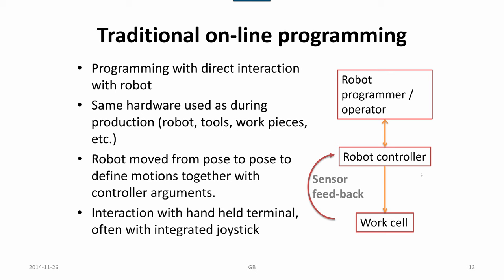Traditional online programming means direct interaction with the robot. We use the same hardware during production: robot, tools, workpieces, and so on. The robot is moved from pose to pose to define motions together with controller arguments, which might be velocity and how the motion is to be carried out, which interpolation mode, which configuration to use. I will go through that later. We have interaction with a handheld terminal often with an integrated joystick.